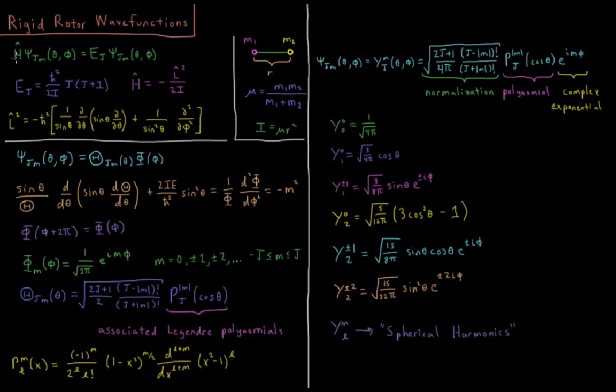So we have our Schrödinger equation for this system: H psi equals E psi. Psi is a function of theta and phi, the angular coordinates in spherical polar. And it depends on two quantum numbers, j and m. And the energy, E, depends on just quantum number j.